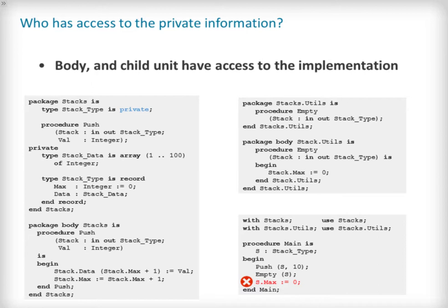We next provide a package specification of the utils child package of stacks which specifies a procedure empty that accepts a parameter typed by the private type stack type, as declared in the parent stacks package. The implementation of the child package can access the implementation of stack type and indeed directly accesses the record fields. However, any attempt by the main procedure to directly access the record fields would be an error.